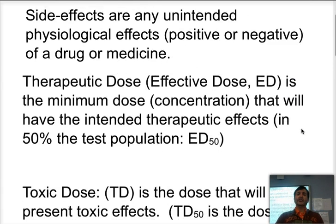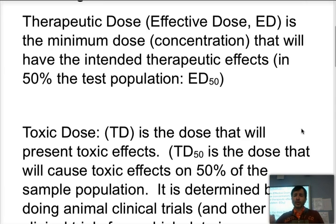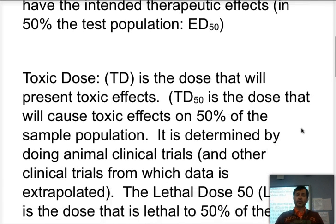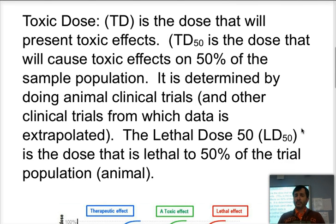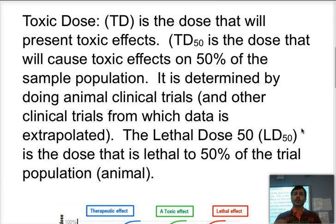Therapeutic dose or effective dose is the minimum dose or concentration of a drug or medicine that will have the intended therapeutic effects. We often talk about ED50, which means it's effective in 50% of the population. A toxic dose, TD, is a concentration of the medicine or drug that will start showing toxic side effects — we talk about TD50 when toxic side effects appear in 50% of the sample population. Another type is the lethal dose: LD50 is the dose that kills 50% of the population. That is never tested on humans, only on animals.